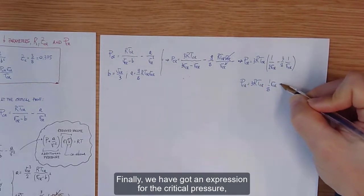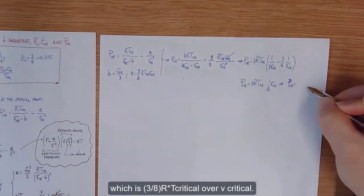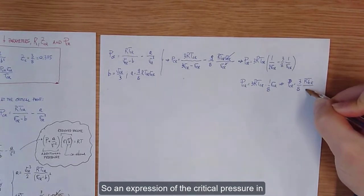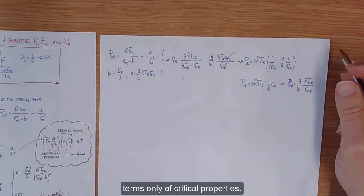Finally, we have got an expression for the critical pressure, which is 3/8 RT critical over v critical. So an expression of the critical pressure in terms only of critical properties.